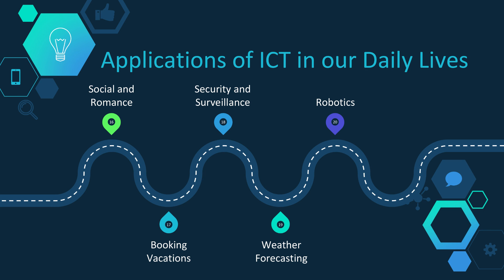Next, we have booking vacations. Travelers can use computers to research schedules, compare route options, and purchase plane, train, or even bus tickets. Next, we have security and surveillance. Computers are increasingly being used in conjunction with other technologies to track people and goods. Next, we have weather forecasting. Computers can process large amounts of meteorological information, such as weather data. Finally, we have robotics. One of the first applications of robotics was in the manufacture of automobiles. Since then, robots have been developed to explore areas where humans are unable to go, to assist law enforcement, the military, and healthcare professionals.